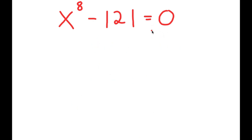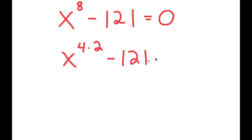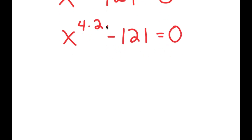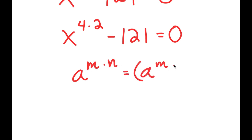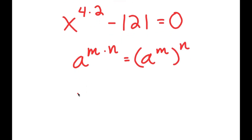Our first step is to rewrite x to the power of 8 as x to the power of 4 times 2. Now, if I have something in the form a to the power of m times n, this is equal to a to the power of m to the power of n. So x to the power of 4 times 2 is equal to x to the power of 4, to the power of 2.